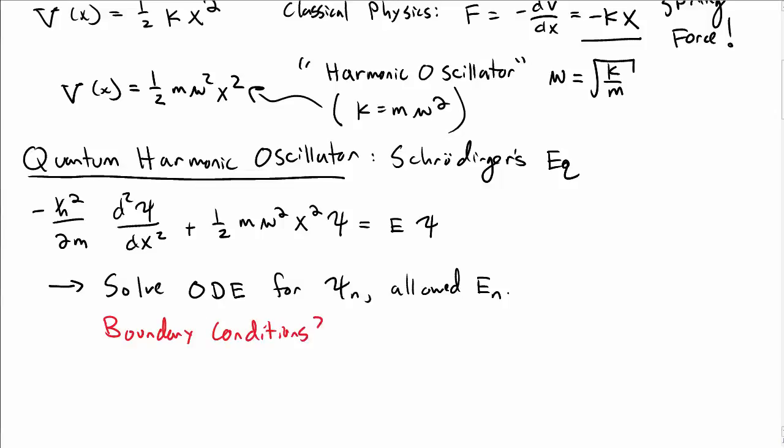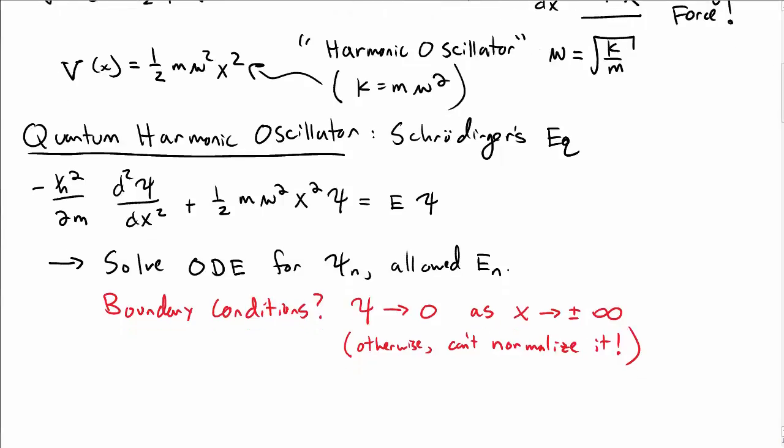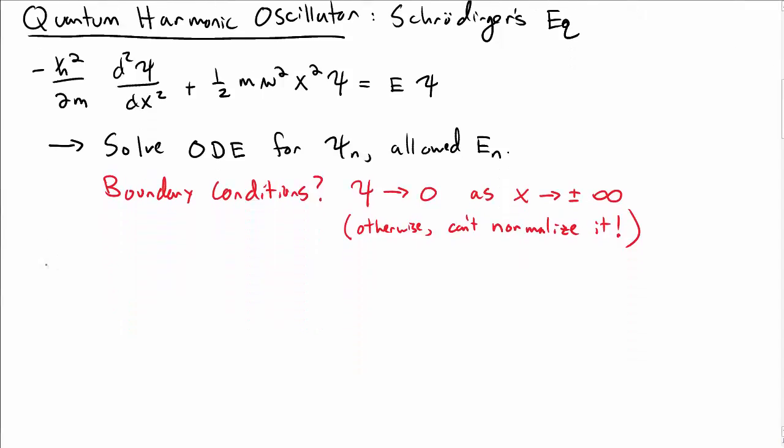We do have boundary conditions in this case for the x squared potential. Namely, we want the wave function psi to go to zero as x goes to plus or minus infinity. If we didn't impose these types of boundary conditions, we can't normalize the wave function, so we want the wave function to vanish at infinity. But other than that, we don't need to say it's zero at any particular point, we just say it's zero as x goes to infinity.